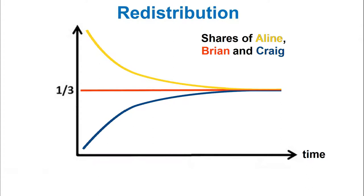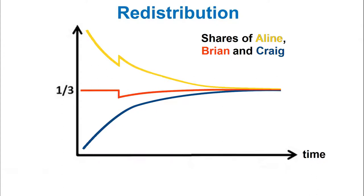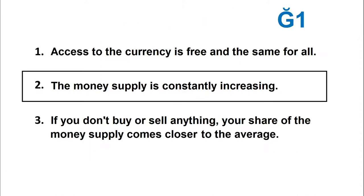On the first day Brian had one third of the money supply, and his share remains at one third — meaning the relative amount of money is constantly redistributed from those who have more than the average to those who have less, and this automatic redistribution takes place without authoritarian intervention. In real life, gains and expenses upset these curves: every time Aline sells a product of her work she cashes in some Junés, and if she makes a big purchase she may end up below the average.